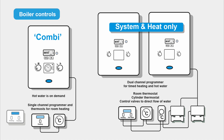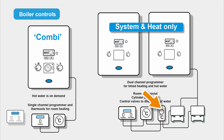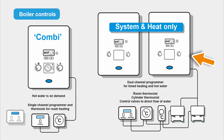System and heat-only boilers are a little more complicated because you're controlling both heat and hot water. You'll have a dual channel programmer for heat and hot water, a thermostat for room temperature, and a thermostat for the cylinder temperature. These thermostats, depending on the plumbing setup, control the zone valves. The valve sends power to start up the boiler. When heating is satisfied and the room is warm enough, the thermostat switches off, removes power to the boiler, and the boiler goes off.